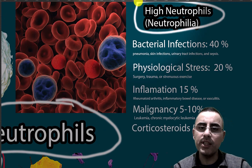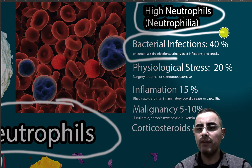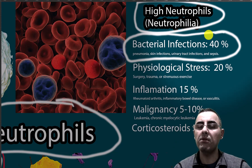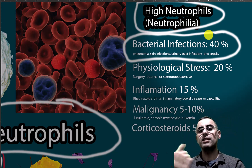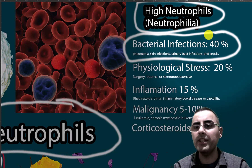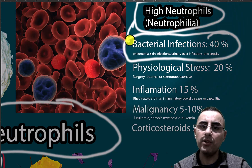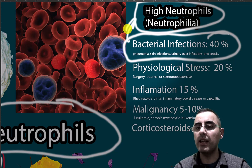The most important cause of neutrophilia is bacterial infection. When a patient comes in and you only know the white blood cell count and neutrophils are high, the first thing to think of is bacterial infection. In 40 percent of cases, high neutrophils are caused by bacterial infections such as pneumonia, skin infections, urinary tract infections, and sepsis.